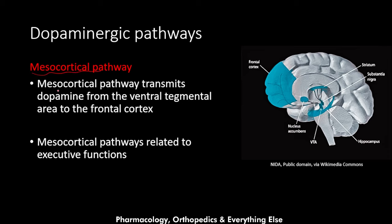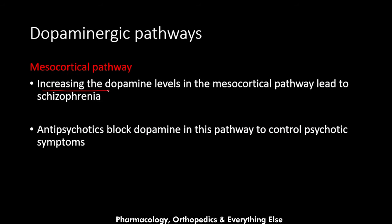The second pathway is the mesocortical pathway, which transmits dopamine from the ventral tegmental area to the frontal cortex. It connects these two structures with dopaminergic neurons and is related to executive functions. Increasing dopamine levels in the mesocortical pathway leads to schizophrenia, and antipsychotics block dopamine in this pathway to control psychotic symptoms.